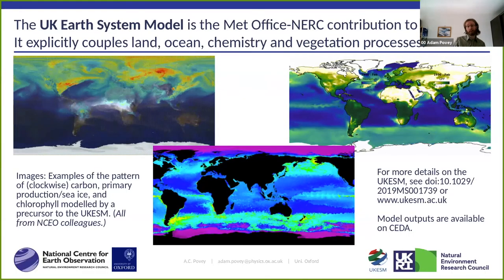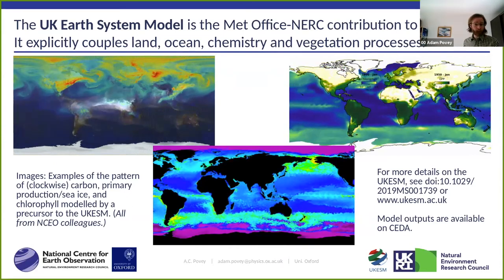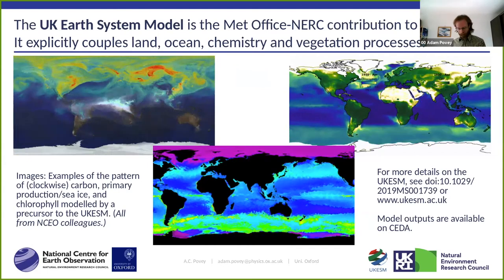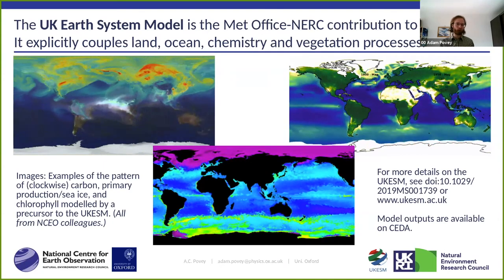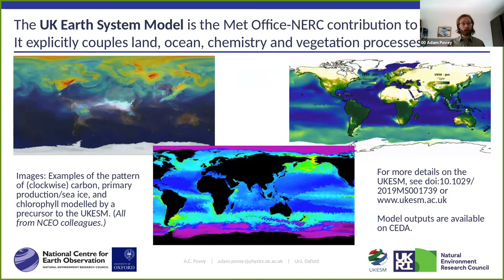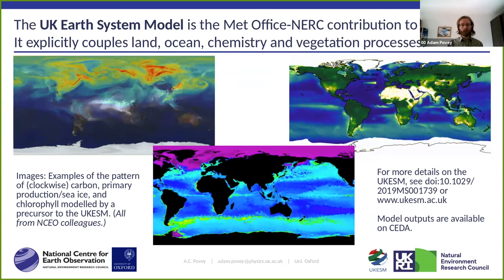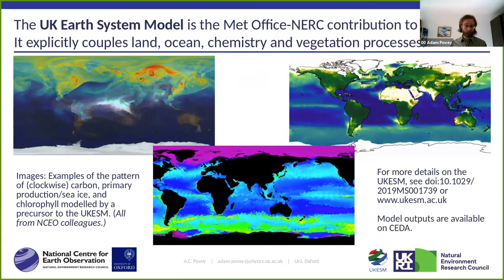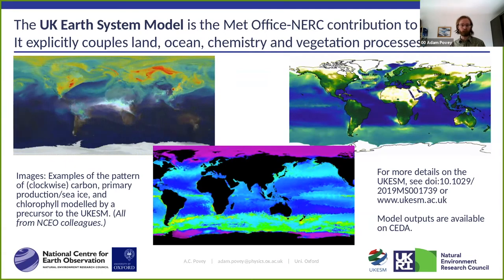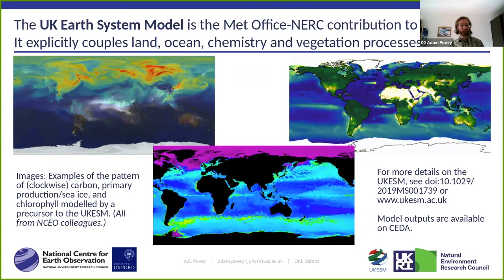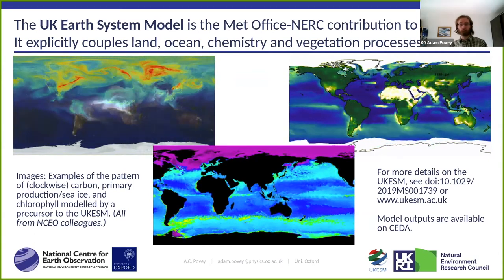Within the UK, NERC and the Met Office are collaborating to make the UK Earth System Model. An Earth System Model, rather than a typical climate model, tries to evaluate more than just what a weather forecast would do — it brings in land processes, vegetation, and the interactions in chemistry between all of them. These visualisations show the sorts of things the model is doing: moving carbon through the atmosphere, showing how at different times of year and in different rainy conditions, plants are taking up different amounts of carbon and making different sorts of interactions.